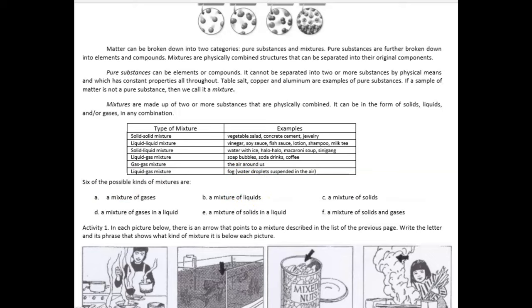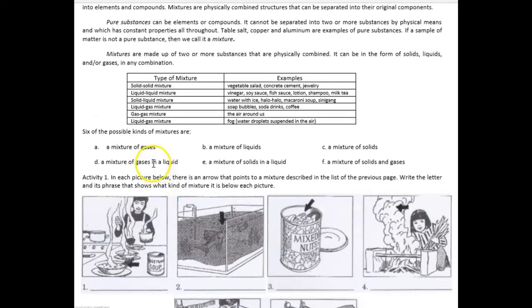As you can see here, there are 6 possible kinds of mixtures: mixture of gases, mixture of liquids, mixture of solids, mixture of gases in a liquid, mixture of solids in a liquid, and mixture of solids and gases.